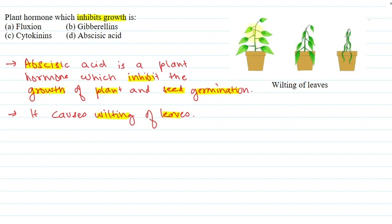You can see a diagram here. This is a leaf. So what happens here? It drops down. What happens here? It drops down. This is the wilting of leaves.